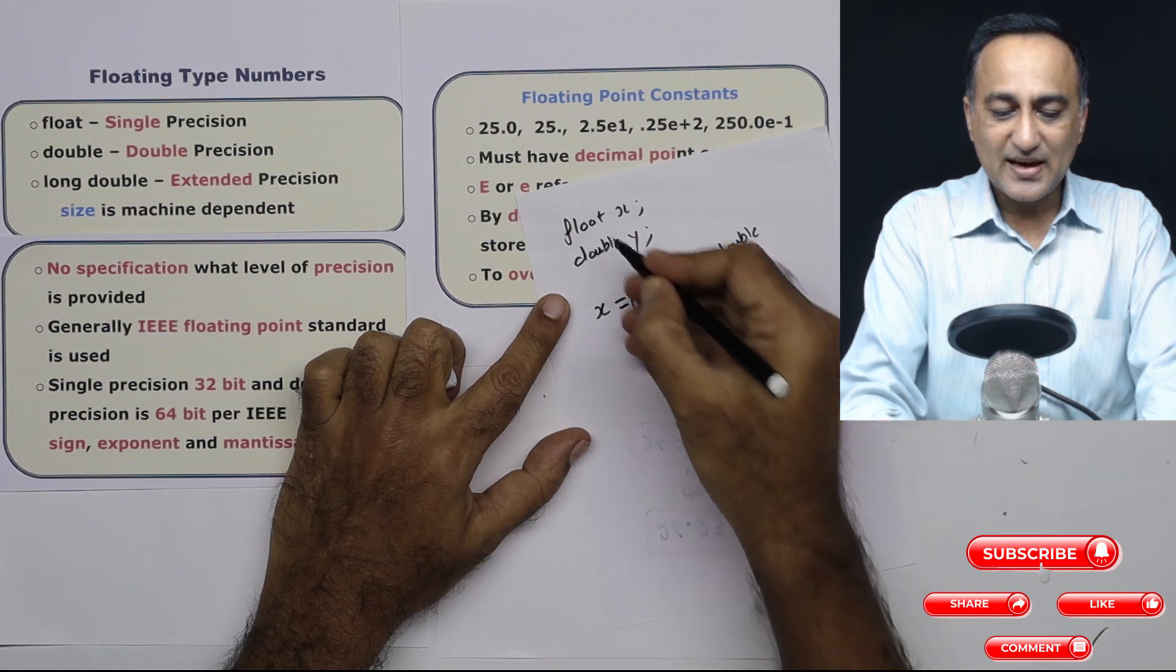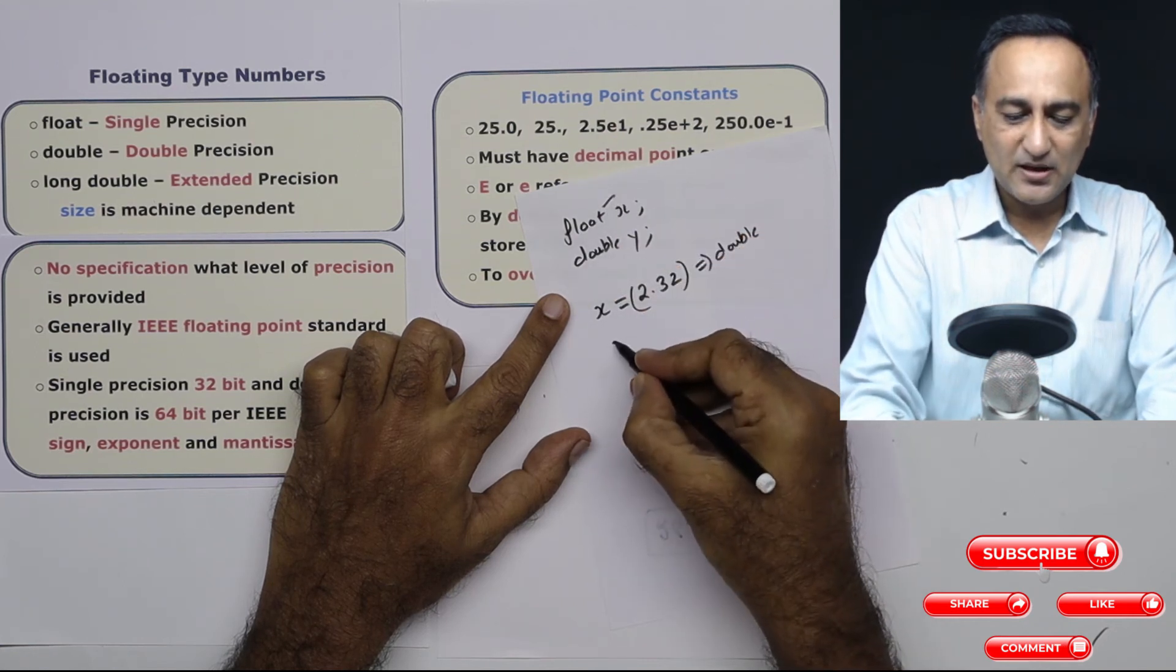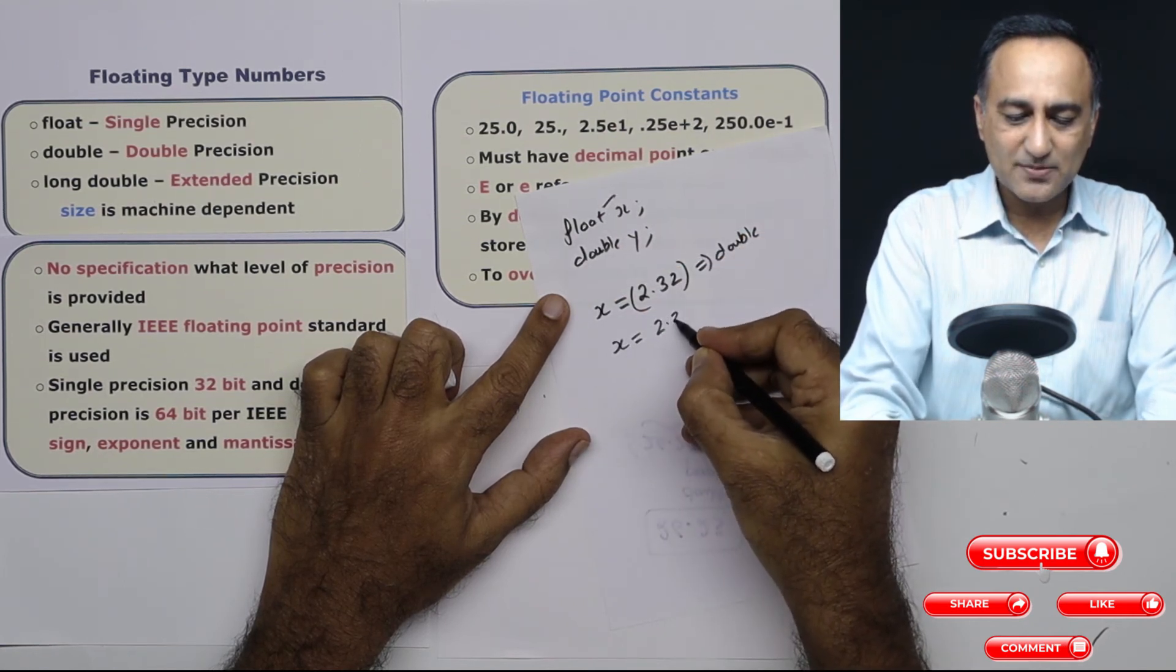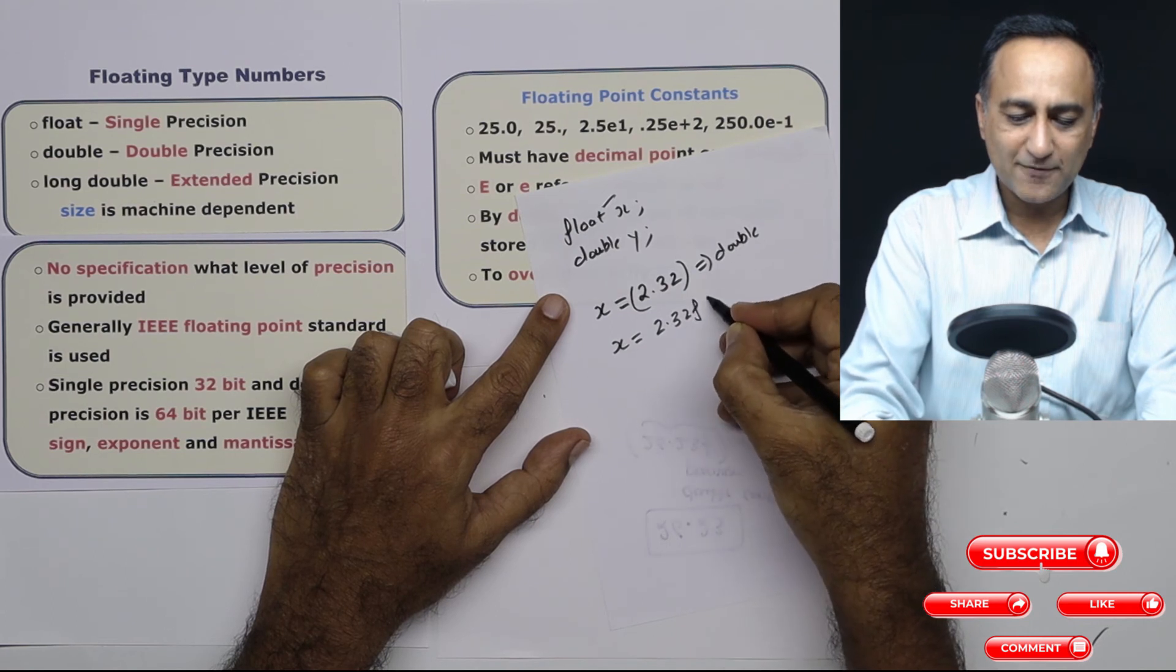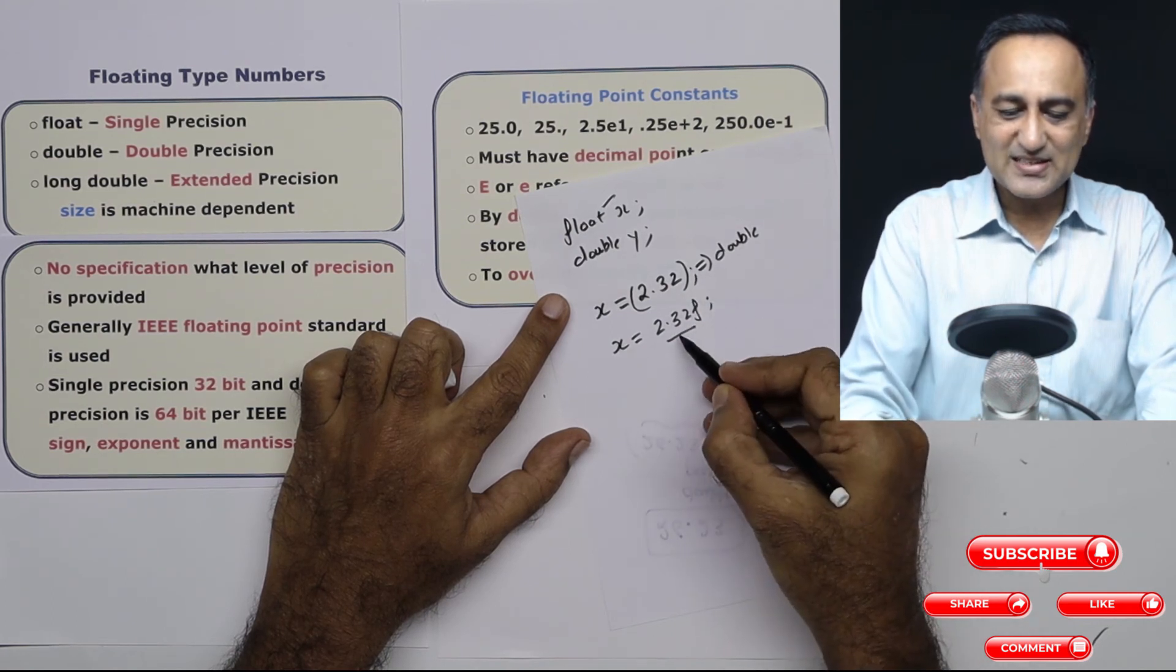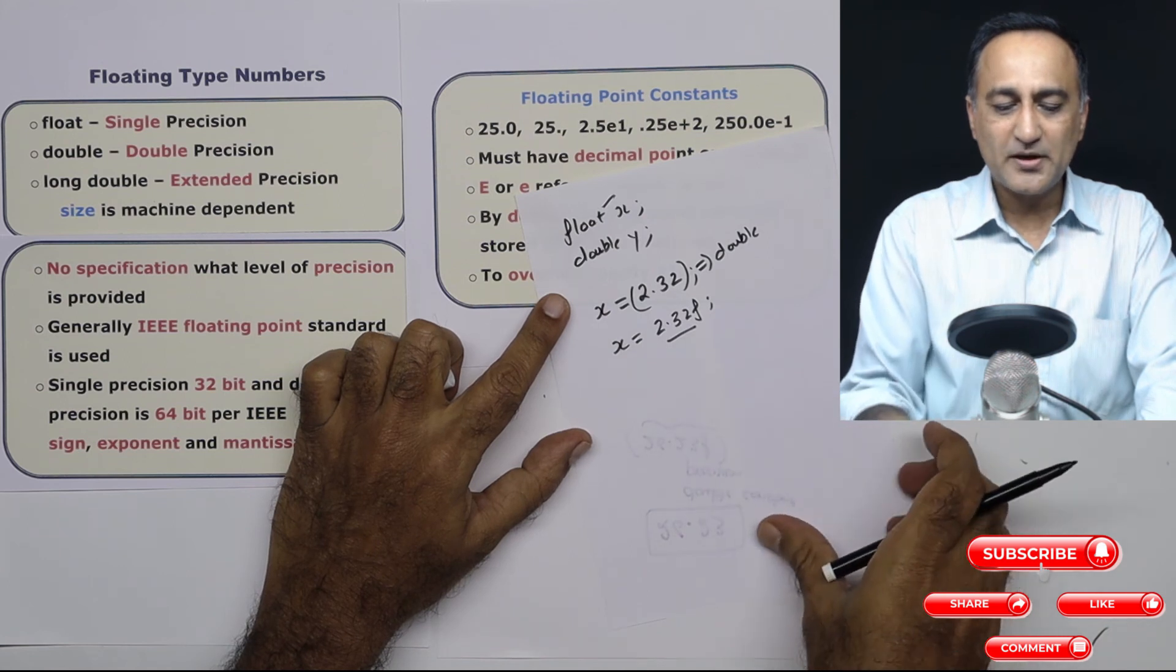If you want to give this as a normal float rather than a double, then you will initialize this to something like this: 2.32f. The f indicates that this is a single precision or a normal floating point number.